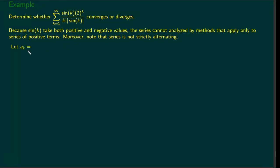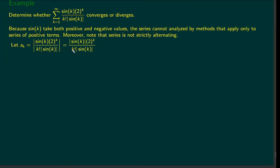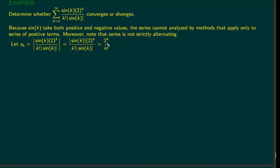We label the absolute value series by a_k. Taking the absolute value, we can pull out all the positive terms from the absolute value sign. The sine k contains an absolute sign, so we can pull that out too, and the absolute value only applies to the remaining term. We can then cancel out those two factors since they both have absolute value, giving us a simplified series. We can now use the ratio test to check convergence.